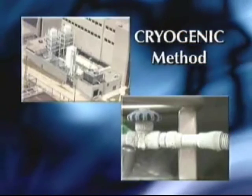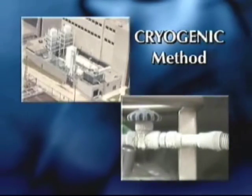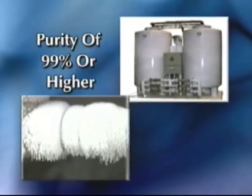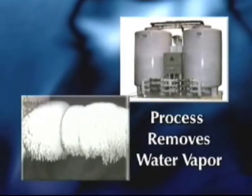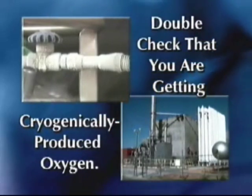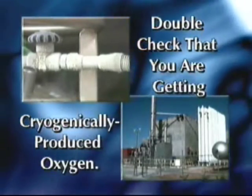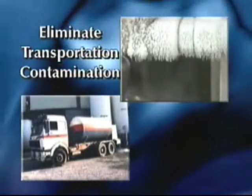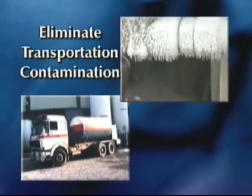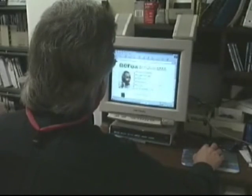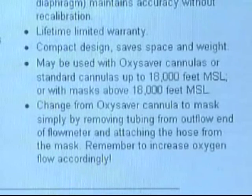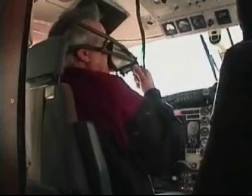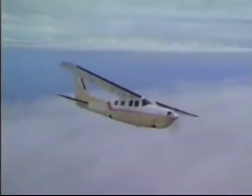Most of the oxygen sold today in the U.S., including aviation oxygen, is produced by a cryogenic method using sub-freezing temperatures. This method produces an oxygen purity of 99 percent or higher. Aviation oxygen is subject to a process that removes water vapor. For safety, it is recommended that you double-check that you are getting oxygen produced cryogenically, and purchase liquid oxygen as close to the production site as possible to eliminate transportation contamination. You are responsible for checking with the equipment manufacturer for the latest operational and emergency procedures to assure your safety. By following the necessary precautions and knowing how to operate your oxygen equipment effectively, you will be able to fly more confidently and more safely.